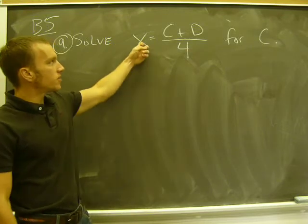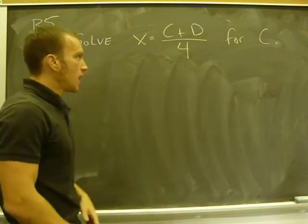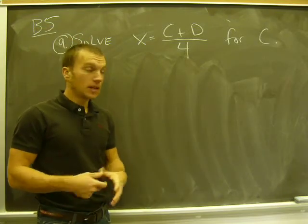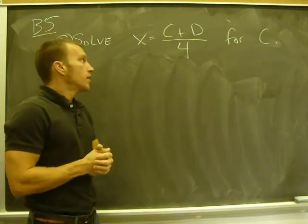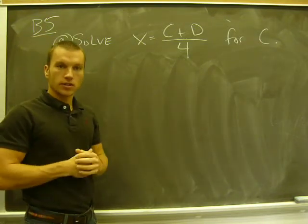So even though I don't have values here for X and D, I'm going to follow my algebraic process and do the same steps that we've been doing in order to get C by itself. So how do I do that? Well, I look at this problem, the first thing I see is there's a fraction.